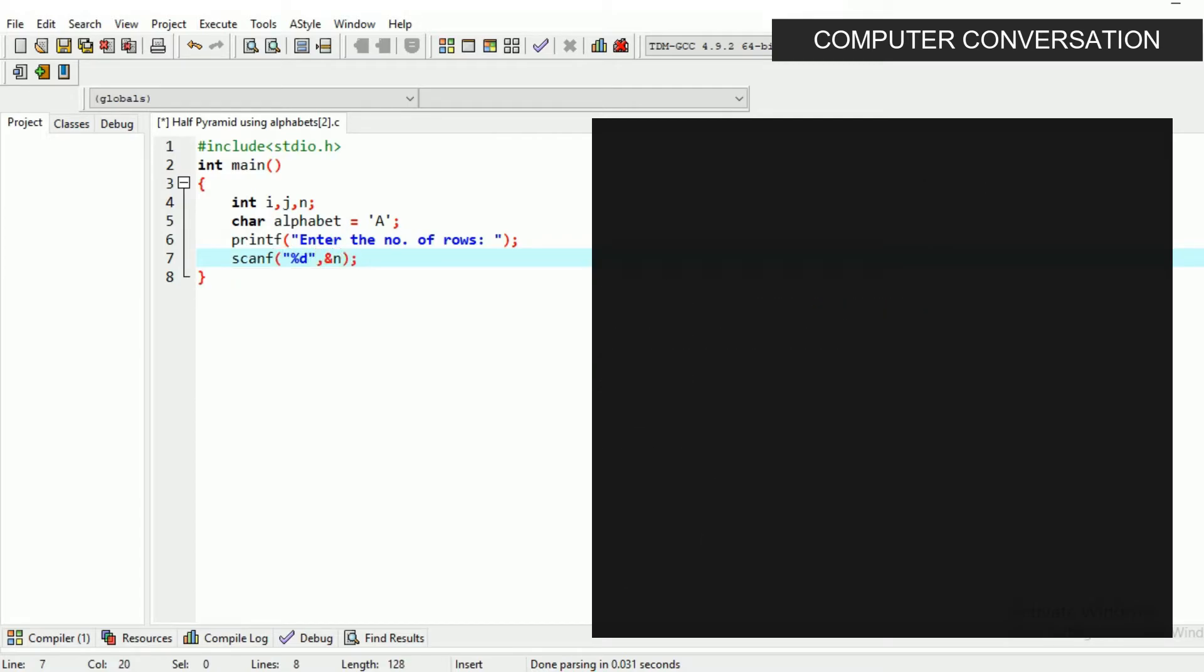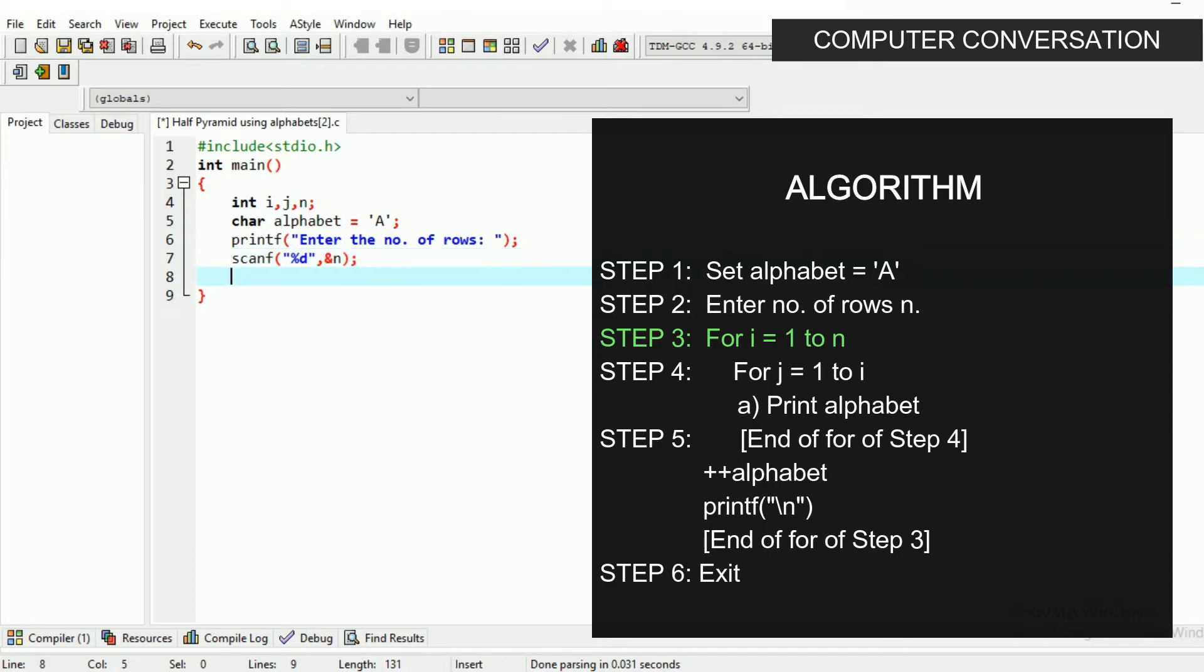Now comes the main part. Write a for loop as for i equals to 1 i less than equals to n i plus plus. Then open a brace and write the inner for loop as for j equals to 1 j less than equals to i j plus plus.